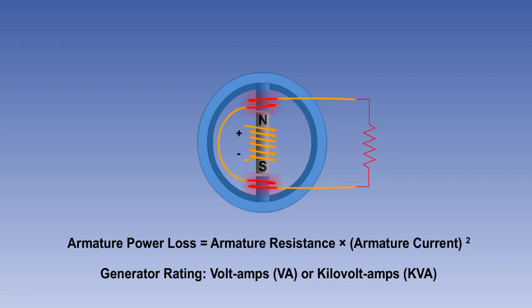Thus, every AC generator is rated in volt amps or kilo volt amps. You will recall that this is the apparent power being felt by the armature.